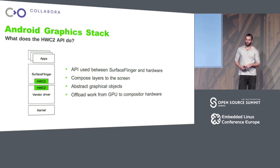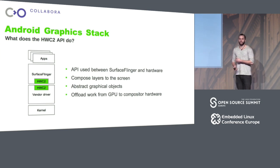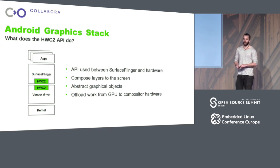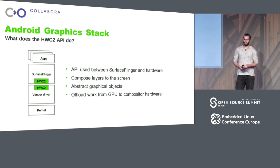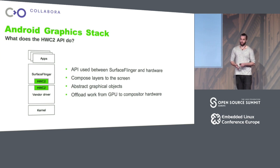Display hardware has support for composing a handful of layers — maybe four, which is a typical number. This display hardware can compose layers faster and more energy efficiently than a GPU can. This frees the GPU up to do actual GPU stuff, like OpenGL or playing games or whatever you like. Doing this work more efficiently means that you can run your GPU faster or for longer, or your CPU faster or for longer, which really matters in the mobile space.